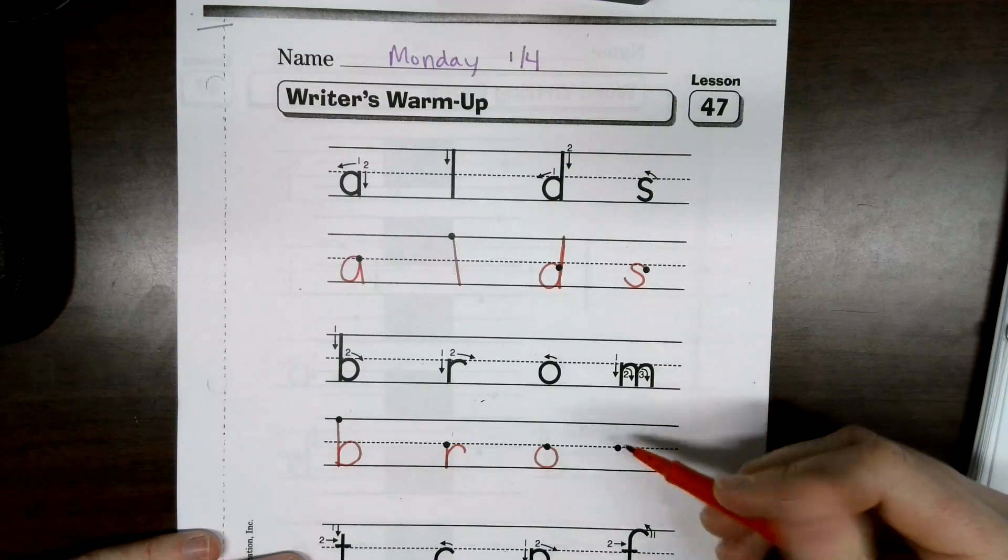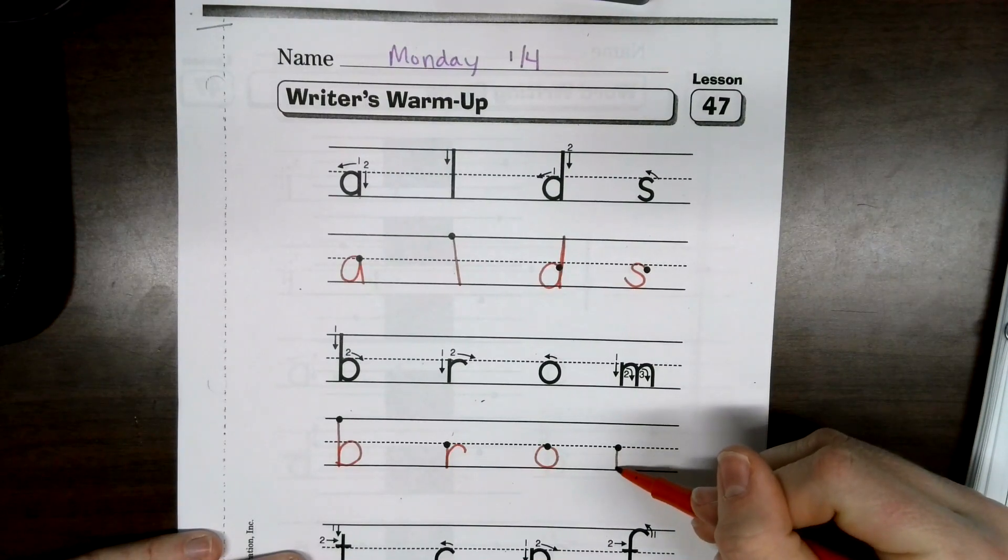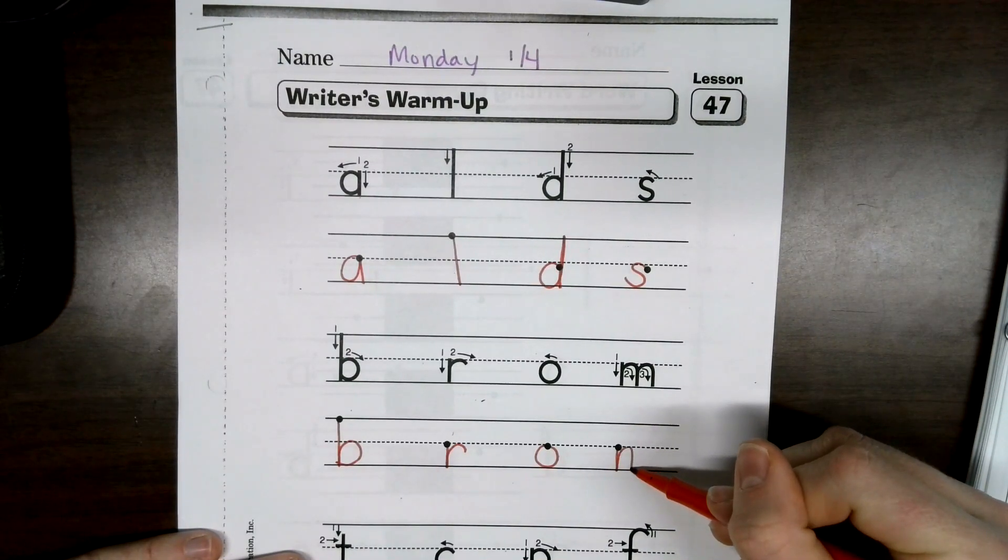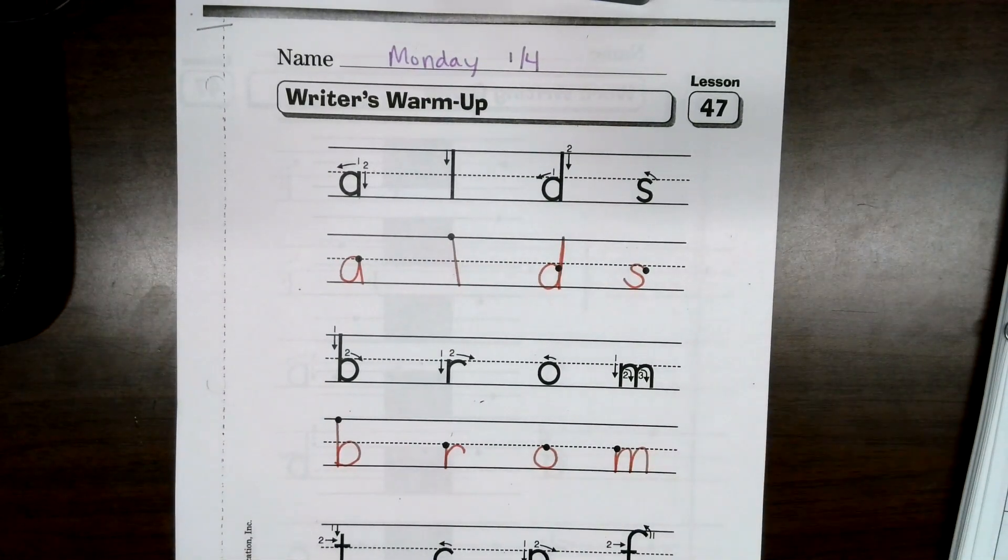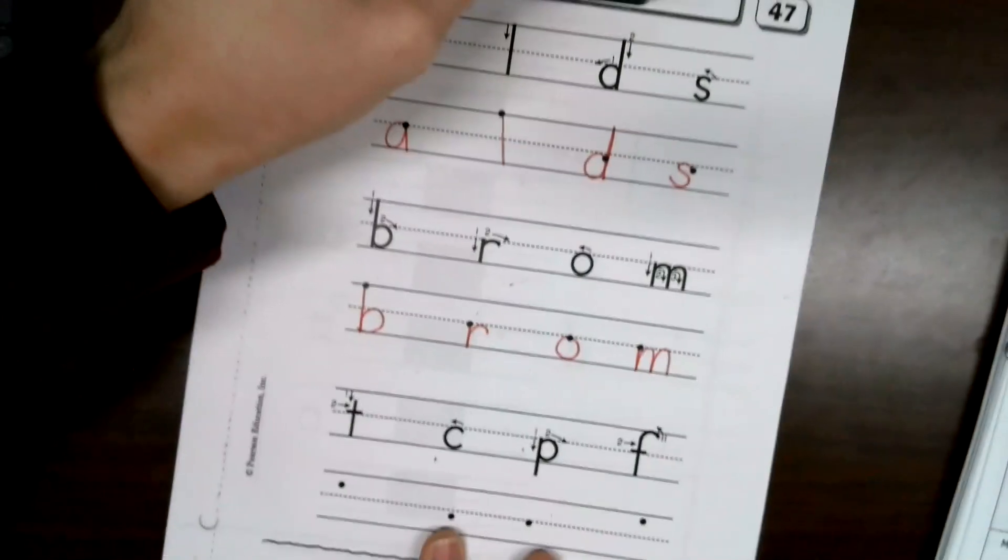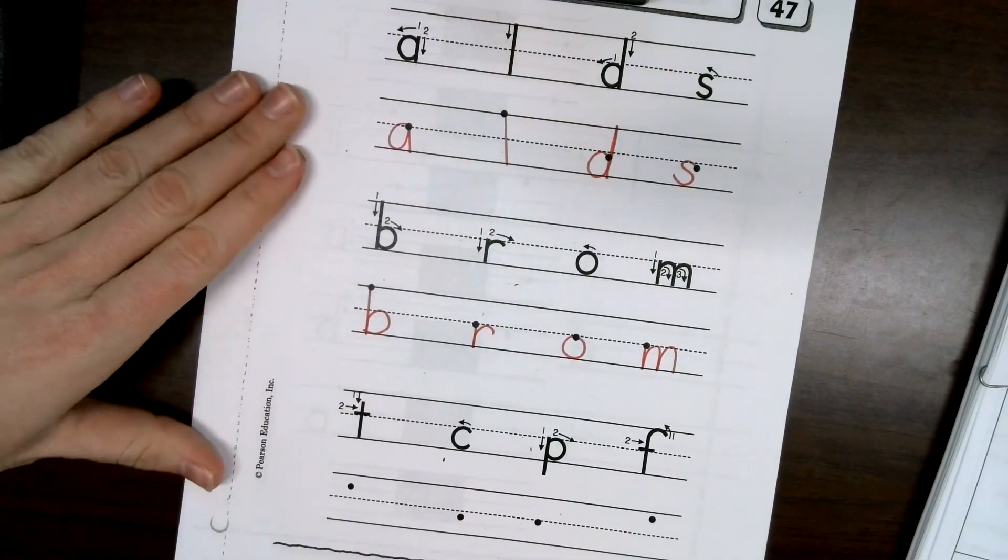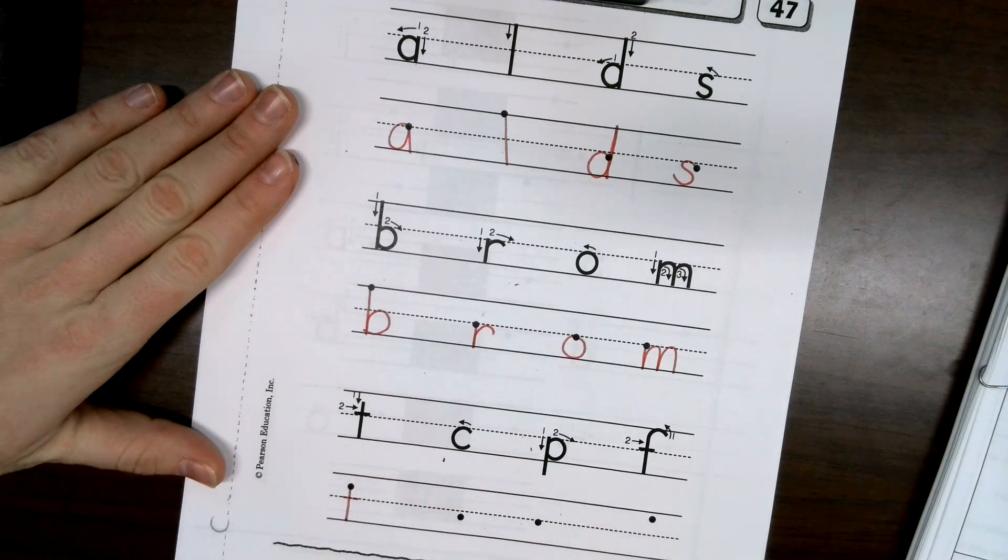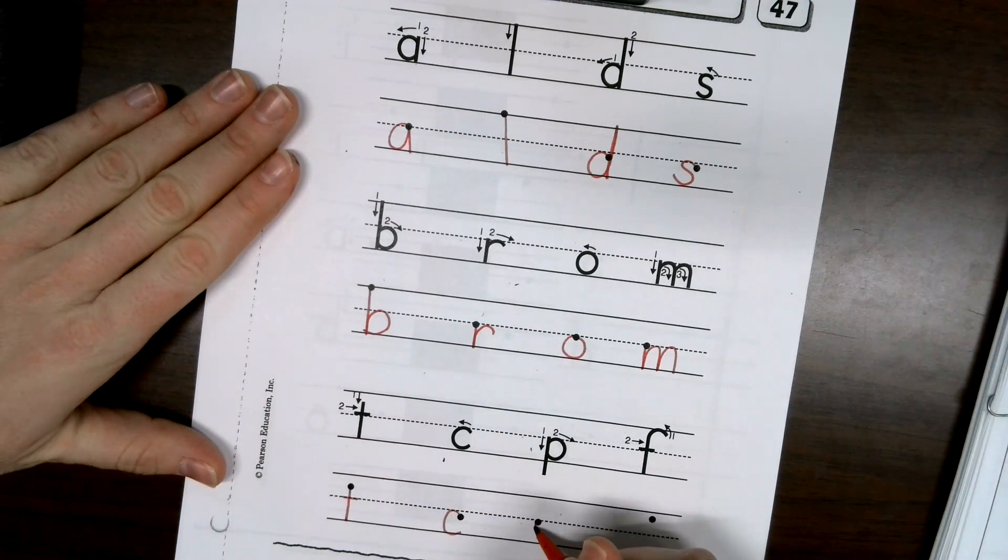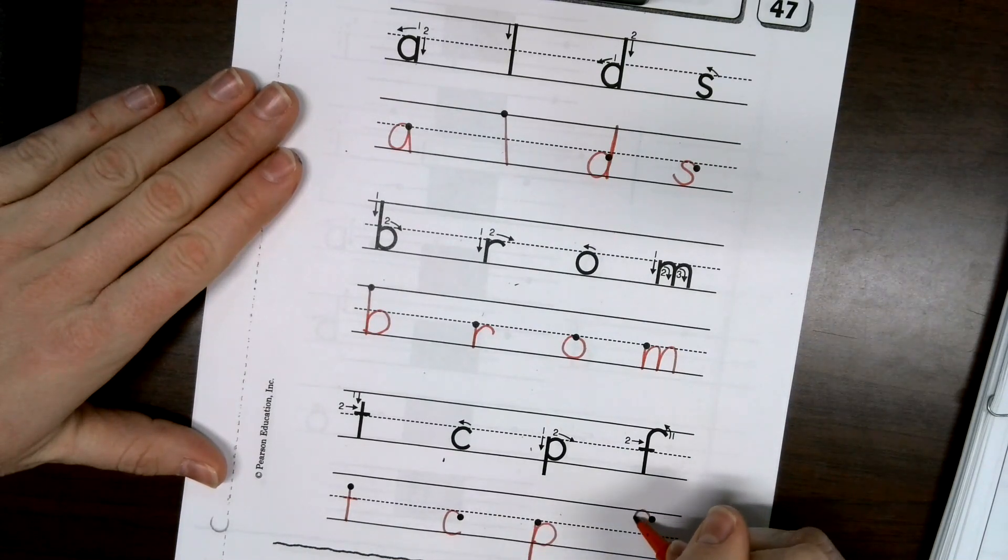M's. Watch me do this one. Down, come back up, make your first hump, come back up and make your second one. And our last one. Our T, our C's, P's, go straight down, come back up and around. And then our F's.